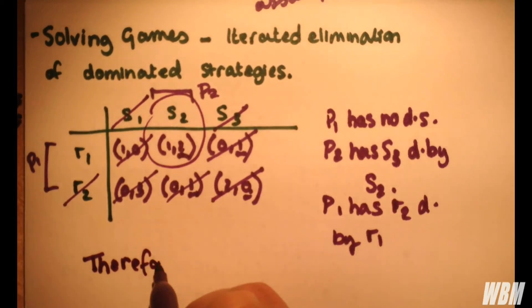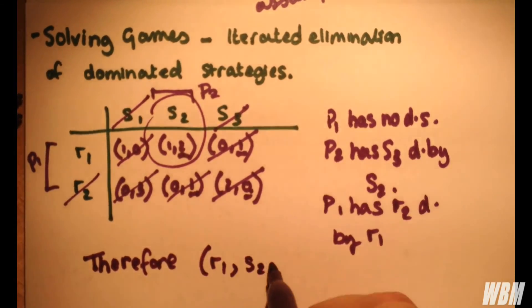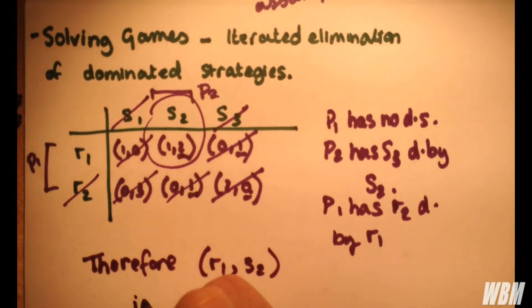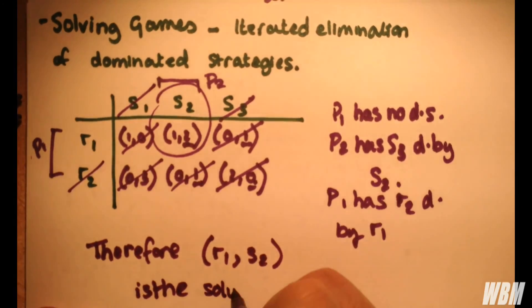So, therefore, R1, S2 is the solution by the method of elimination of dominated strategies.